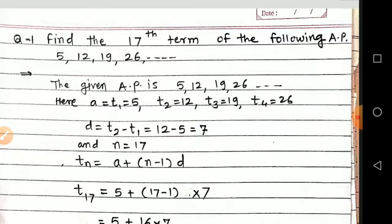Find the 17th term of the following AP: 5, 12, 19, 26, and so on. Now read the example carefully, then how to solve it and what to write down in the beginning lines.